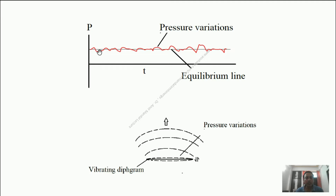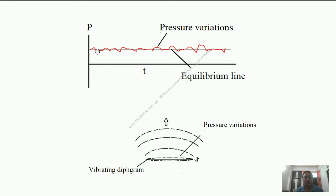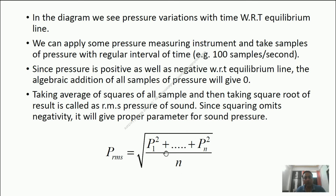The reason being, pressure is continuously becoming positive as well as negative — sometimes rising and then falling like this. So compared to this equilibrium line, the pressure is negative as well as positive. In case we are taking some samples of pressure on this diaphragm by the help of some measuring instrument, the algebraic sum of all those pressures will be zero because it is positive sometimes and sometimes negative. So the algebraic sum of all those samples will become zero.